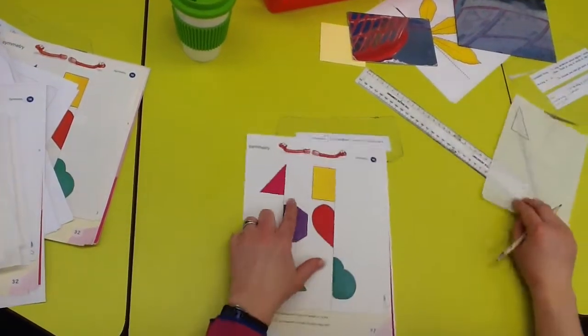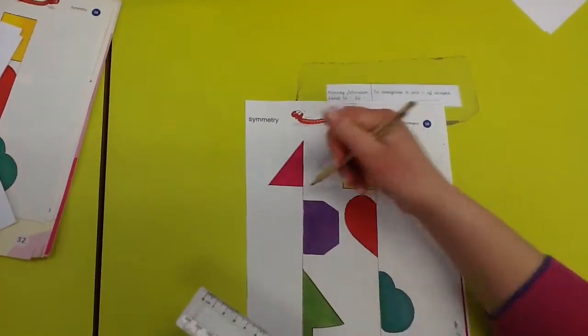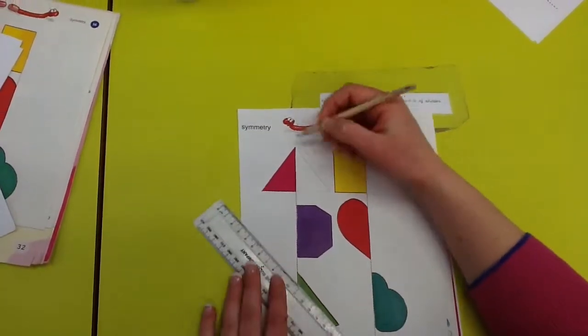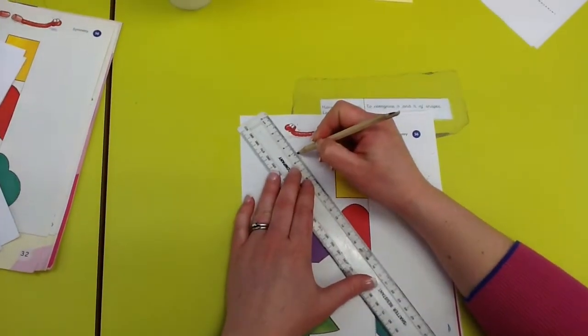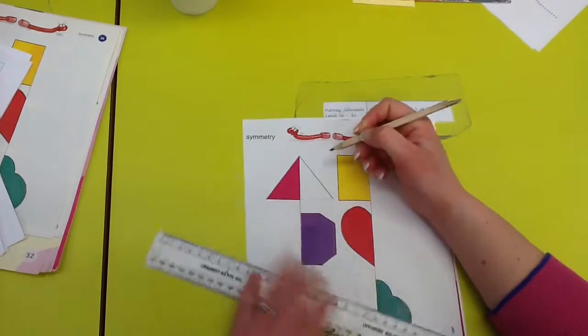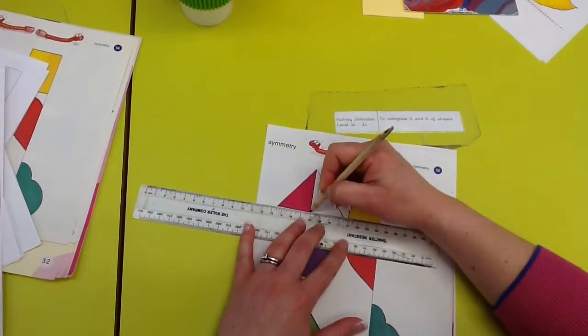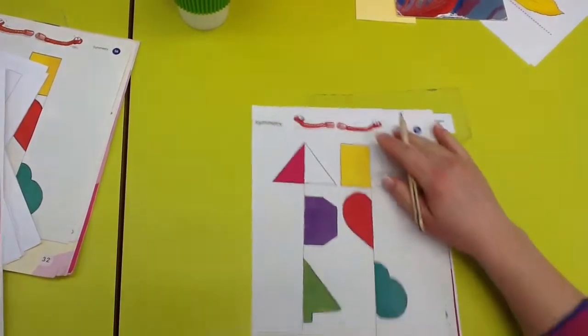And when I take it off, you'll see that I've got my reflected shape in the mirror line drawn on here. And now I can use my ruler to go over that shape to make sure it's super accurate. Ta-da!